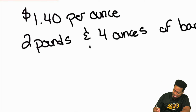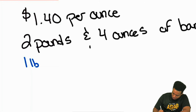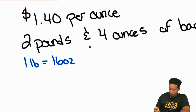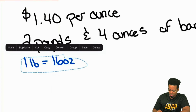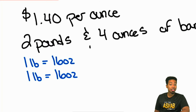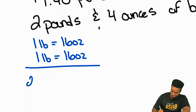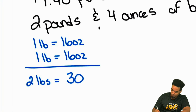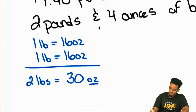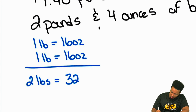What's the fact that we know? One pound is equivalent to sixteen ounces. So one pound equals sixteen ounces. You have two pounds, so that's two sets of sixteen ounces — sixteen plus sixteen equals thirty-two ounces.